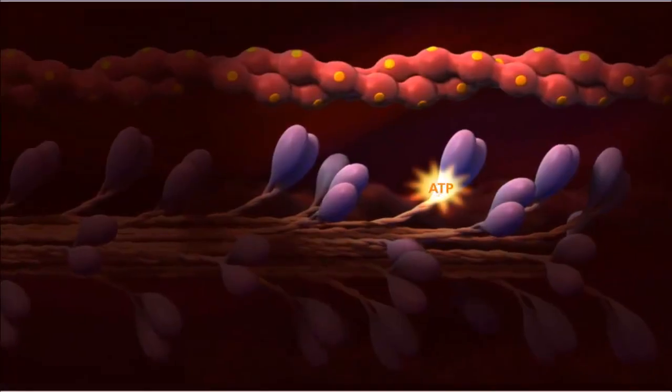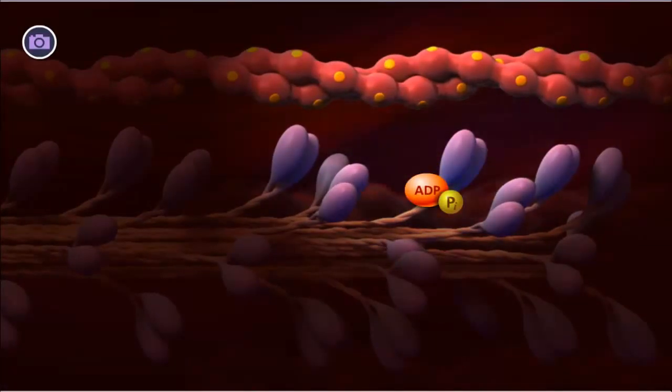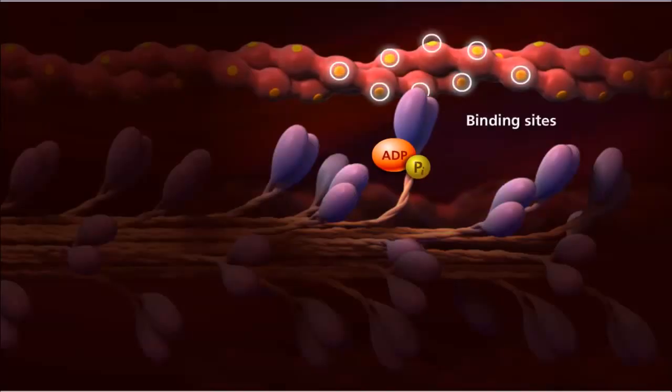A contraction begins when a bound ATP is hydrolyzed to ADP and inorganic phosphate. This causes the myosin head to extend and can attach to a binding site on actin, forming a cross-bridge.